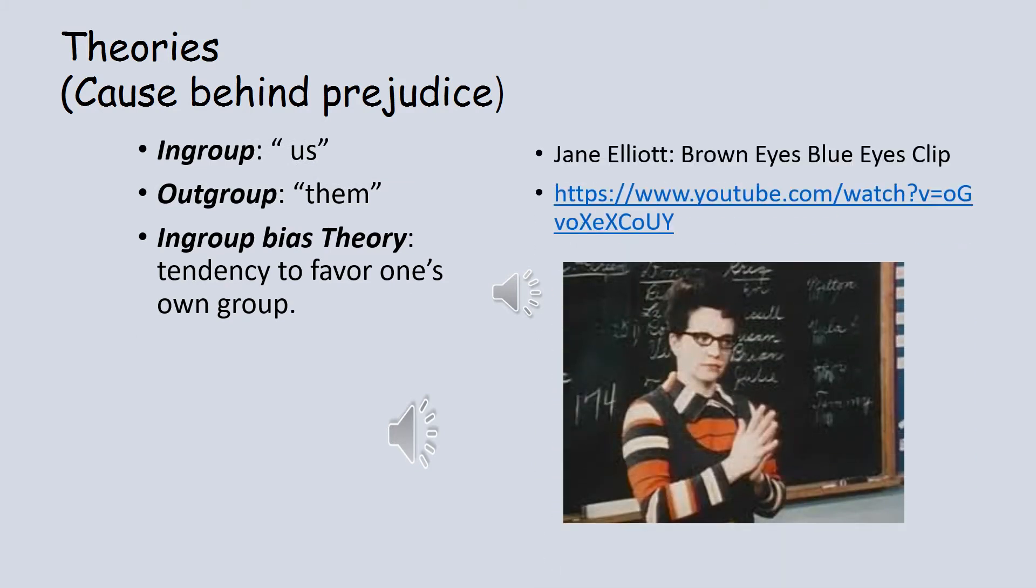We're going to look at three different theories behind the cause of prejudice. What causes us to develop this prejudice or negative attitude. The first theory is the in-group bias theory. This is when we tend to favor people who are in our group and share something in common with us. So, we start to develop this us versus them mentality, and then we start to feel negative towards people who aren't in our group.